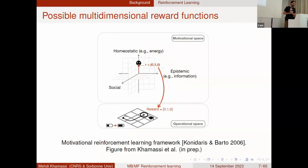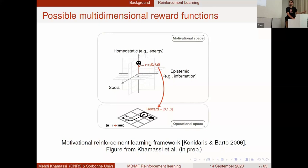Representing rewards as a scalar doesn't mean you can't extend the framework. There's an extension called motivational reinforcement learning where rewards are multi-dimensional: homeostatic rewards like energy, epistemic rewards from reducing uncertainty in internal representations, and social rewards. Karl Friston's active inference theory combines both. The magnitude of subjective reward can change over time depending on internal needs — for example, motivation for food fluctuates with satiation. For this presentation, we assume a fixed motivation for food yielding reward=1.